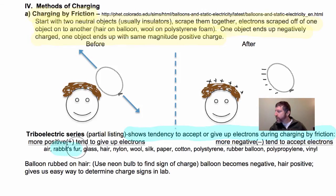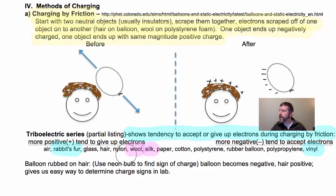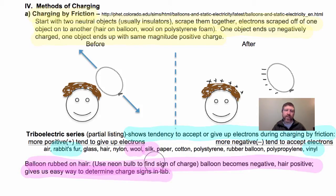So if I rub rabbit's fur on, for example, vinyl, it's clear that the rabbit's fur will end up positive and the vinyl will end up negative. What if I rubbed wool on a piece of silk? Because the wool is more to the left on this list, it would end up positive and the silk would end up negatively charged. When we rub the balloon on hair, the balloon becomes negative and the hair positive, and this gives us an easy way to determine the signs of objects — just by seeing if a balloon repels from it. If it does repel, the object is negatively charged. If our negative balloon attracts, it may not be positive, and we'll see why in a minute.